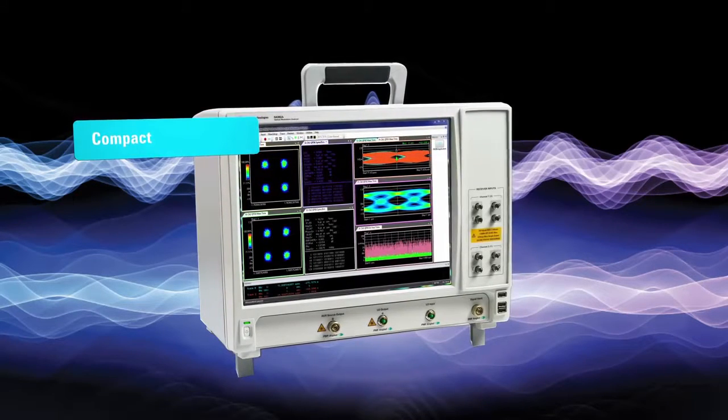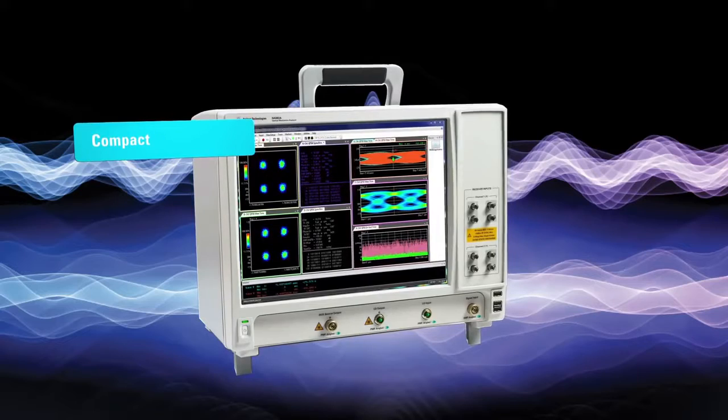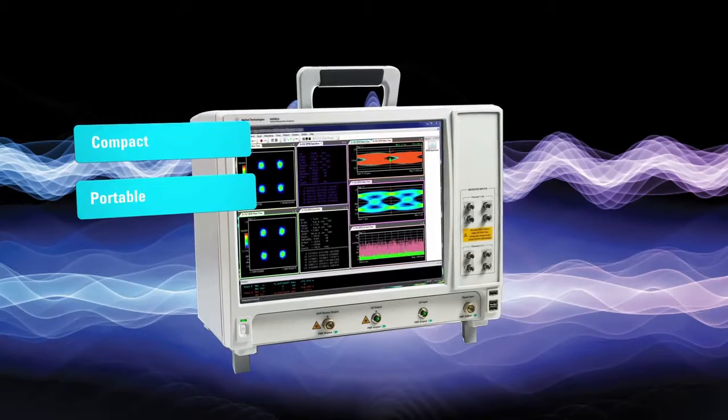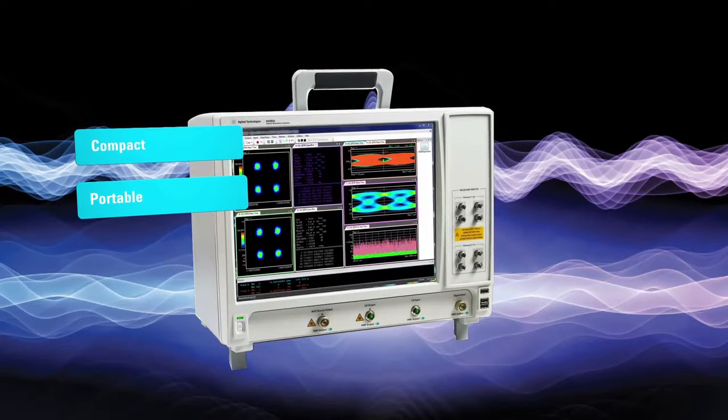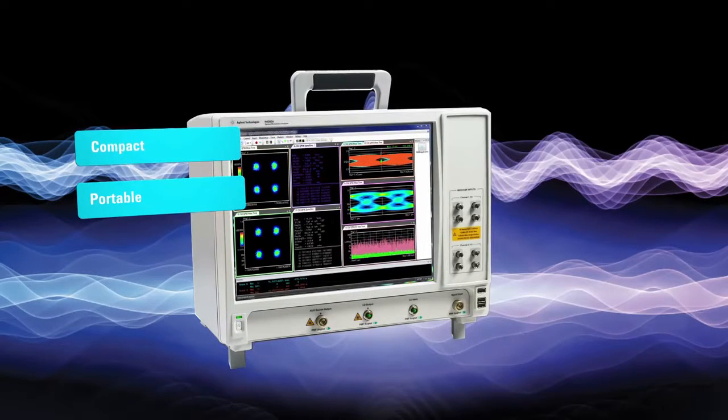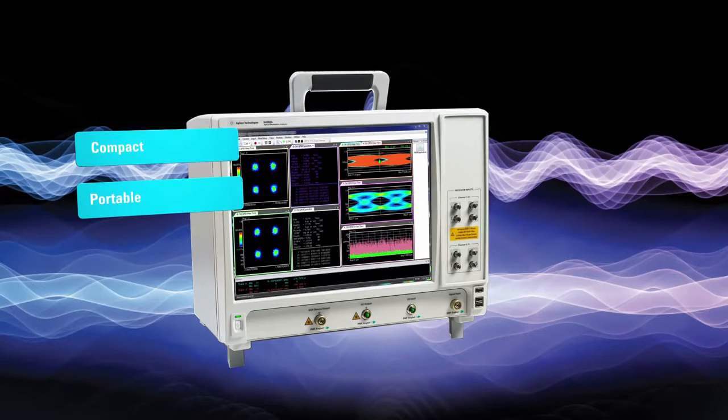The high degree of integration means that the N4392A is no bigger than a mid-sized oscilloscope and weighs around 13 kilograms. The handle is on the top so you can quickly bring your test equipment to your signal wherever you need it in the lab.